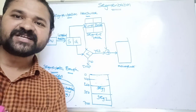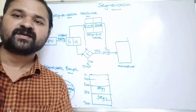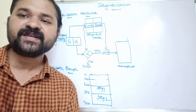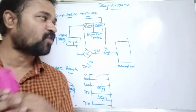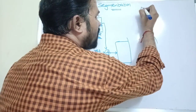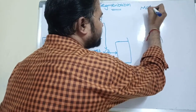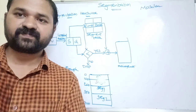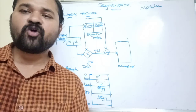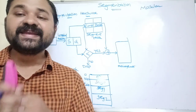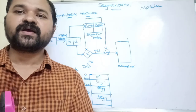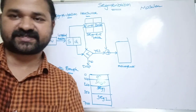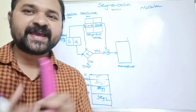Let's see about segmentation in operating systems. Segmentation is mainly useful in order to maintain the modular structure of your program. The major drawback of paging is that a module may reside in different pages of the process.